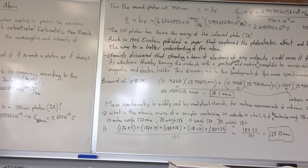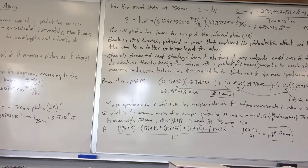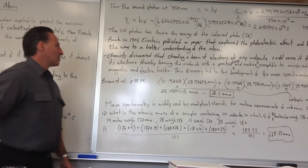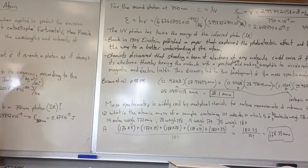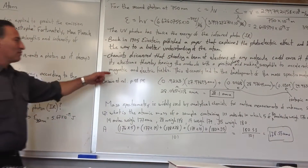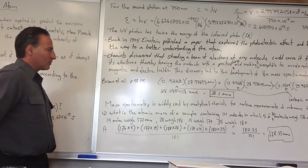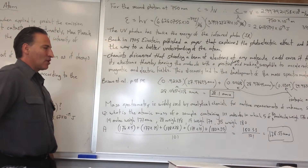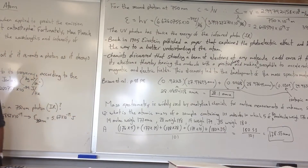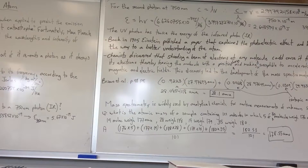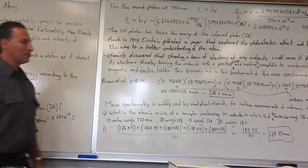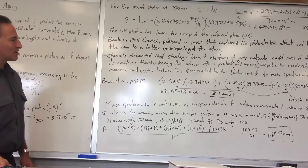Chemists around the same time discovered that shooting a beam of electrons at any molecule could cause it to lose one of its electrons, leaving the molecule with a positive charge and making it susceptible to acceleration by both magnetic and electric fields. This paved the way for the discovery of the mass spectrometer, which is a widely used diagnostic tool today. We use mass spectrometers to find the molar mass of unknown samples of chemical substances.